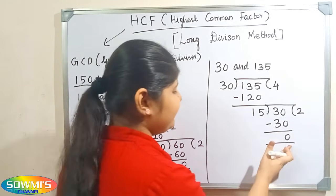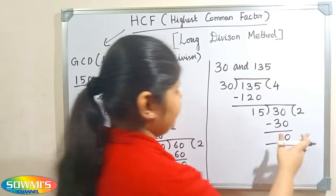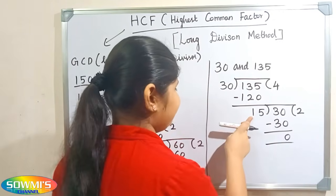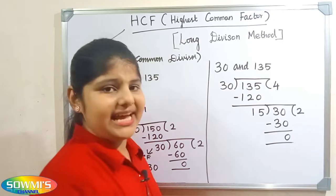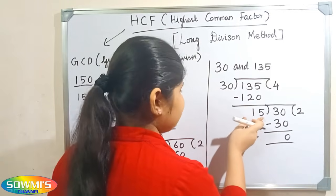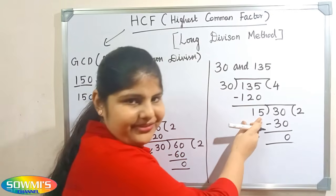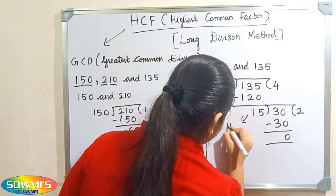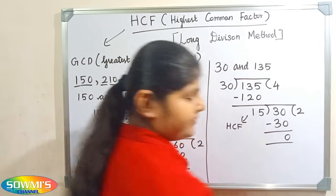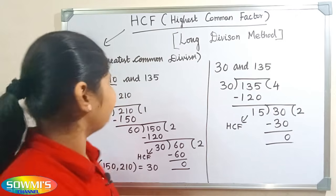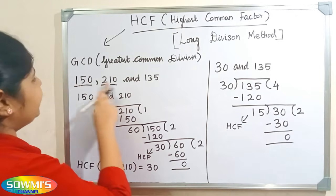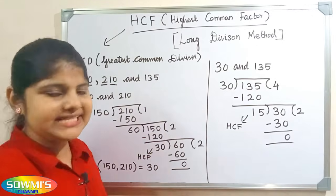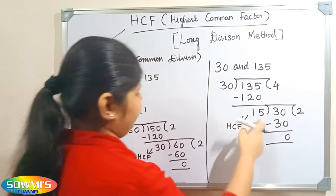Now we will end the process here because the remainder is 0. The last divisor will be the HCF. Here the last divisor is 15, so the HCF of 150, 210, and 135 is 15.